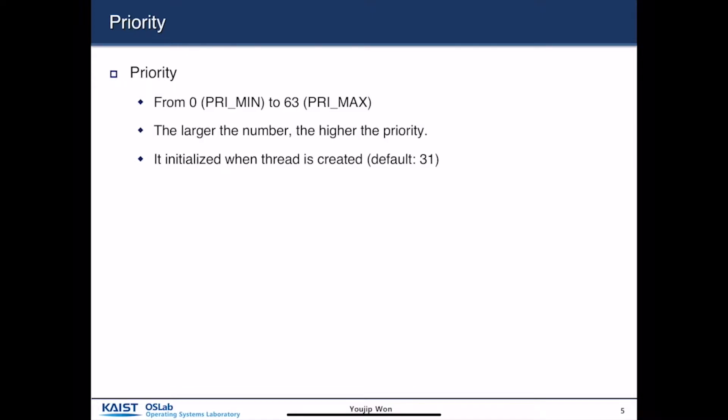In Pintos, the priority of a process ranges from 0 to 63. It is a signed integer, with a minimum of 0 and a maximum of 63. The larger the number, the higher the priority. When a thread is initialized, the priority of a thread is set to 31.